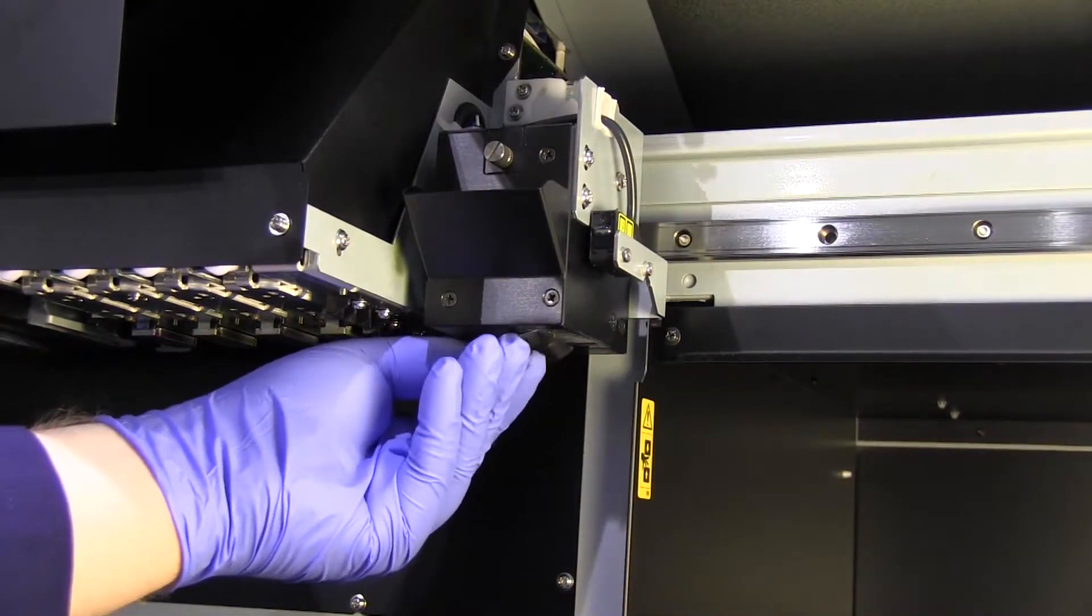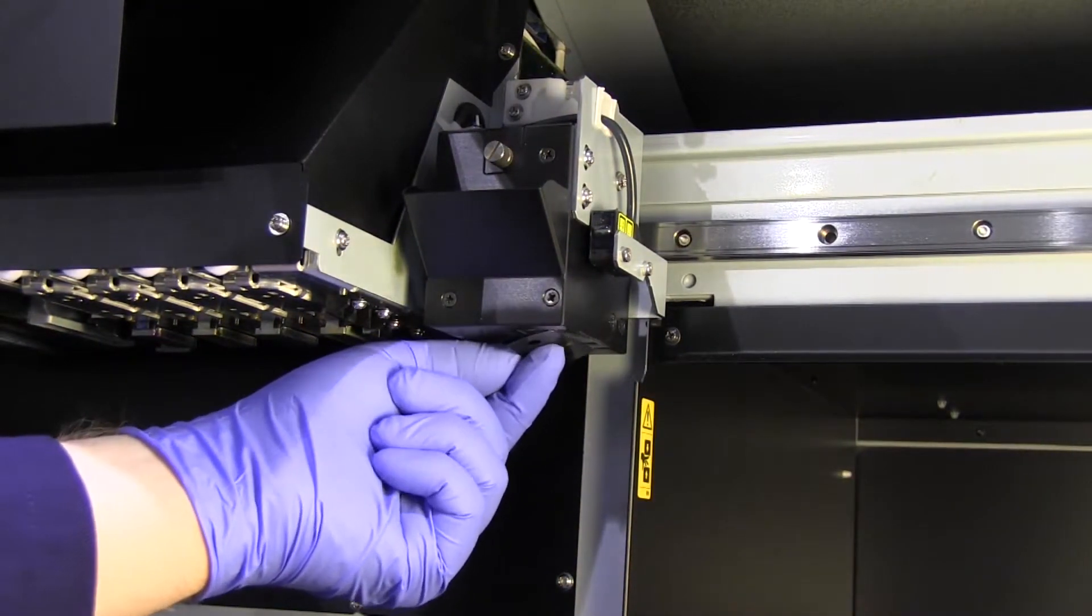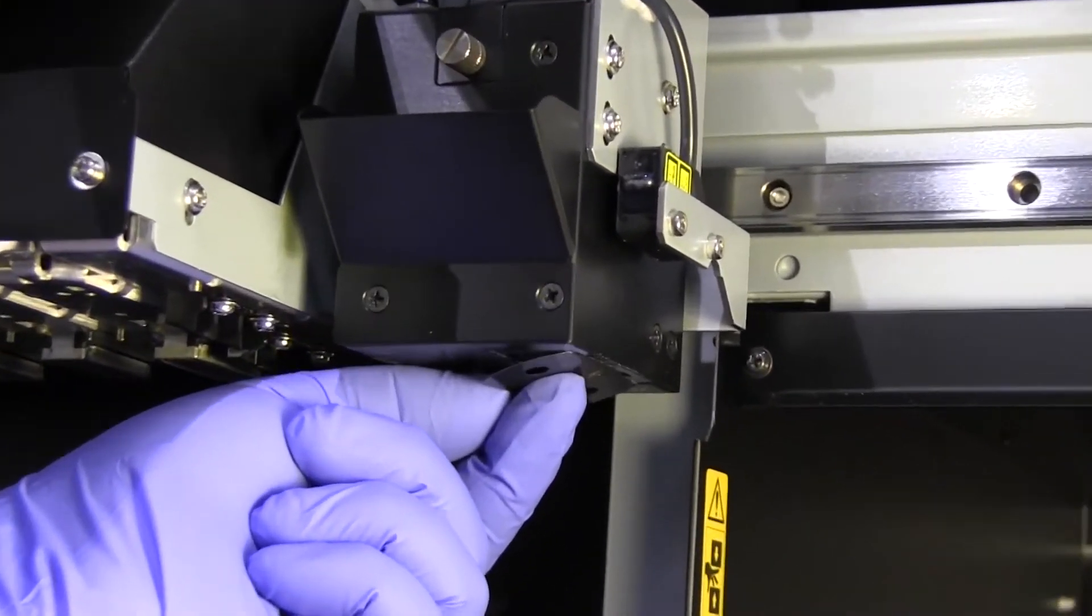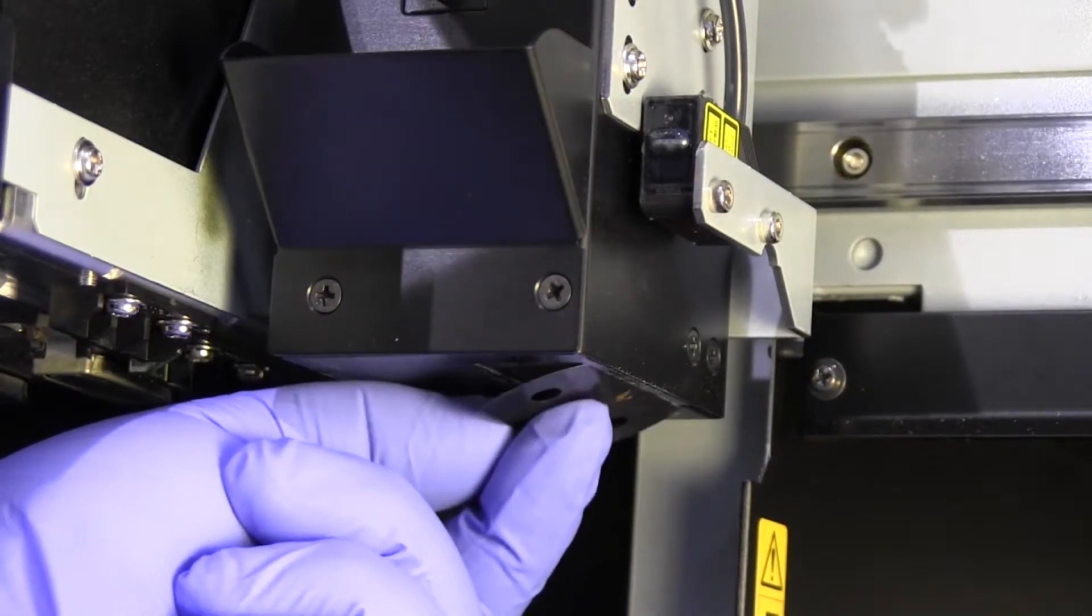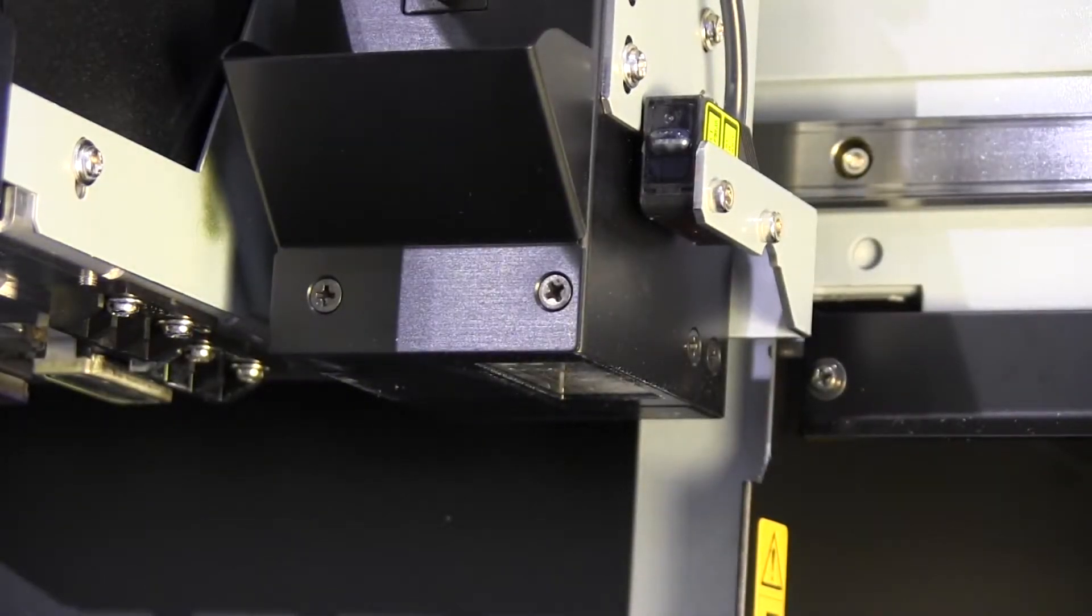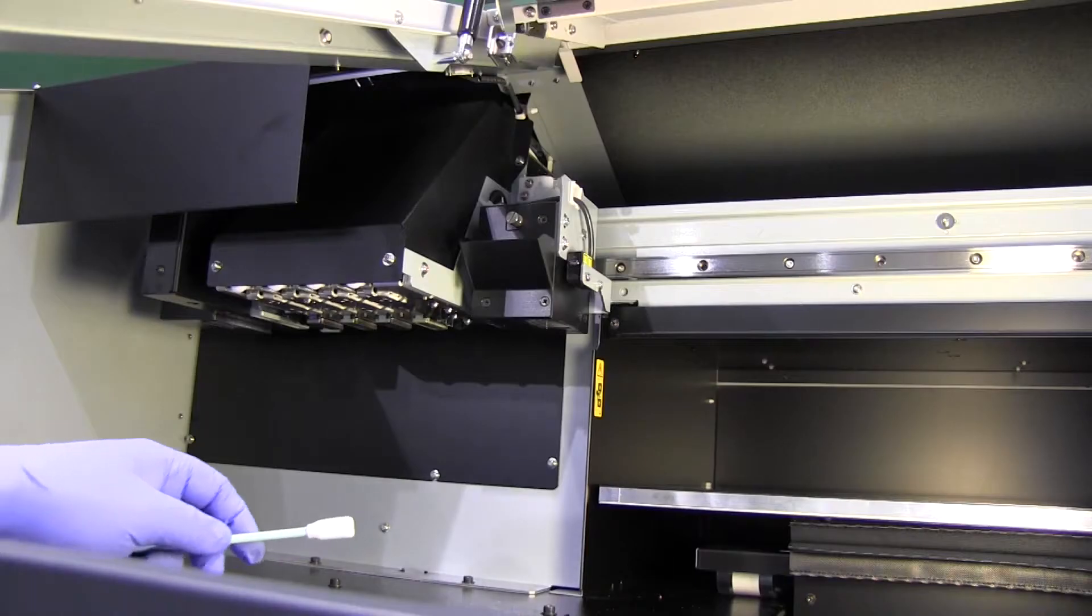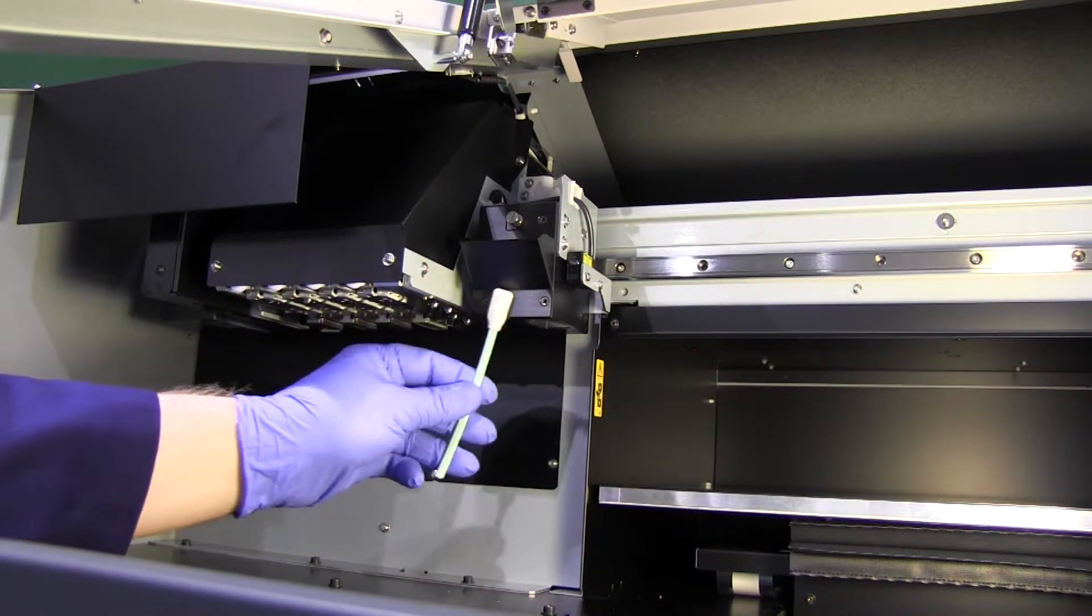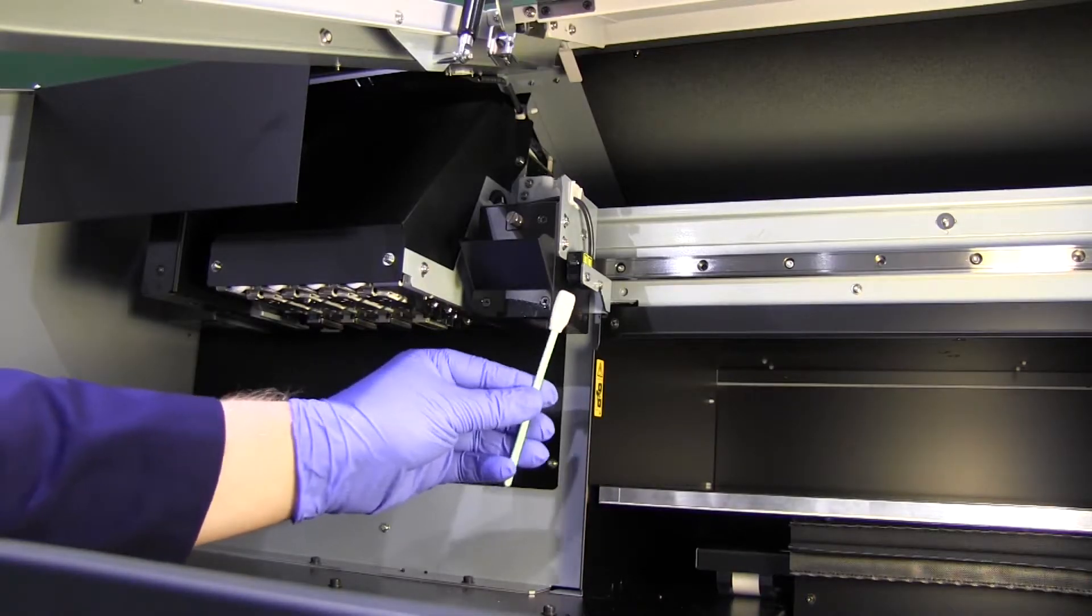The surface of the lamp lens can over time get a film of cured ink settling on it. Use a straight blade edge or similar to carefully scrape the ink off, but be sure to use only the flat edge and not the sharp point of the blade so as not to damage the surface. Isopropanol can be used to clean the lamp casing if needed.